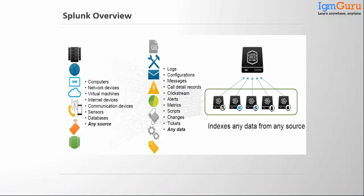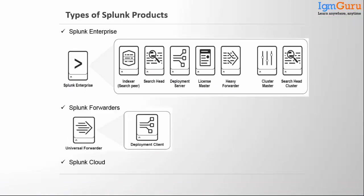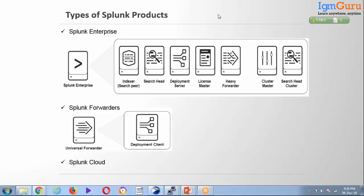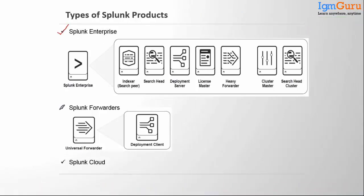Let me know wherever you have any queries and we can stop and have a discussion. So let's go to the next slide. These are the Splunk products: Splunk Enterprise, Splunk Forwarder, and Splunk Cloud. As the cloud name implies, it should be in an AWS or Azure environment where we install Splunk and bring everything over there. We'll understand what all these products are and what each component does.